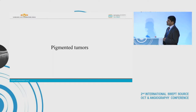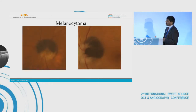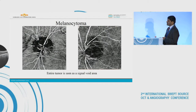Coming to the pigmented tumors — this is a fundus photograph of an optic disc melanocytoma. On OCTA, the entire tumor is seen as a signal void area with hardly any vasculature visible.